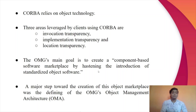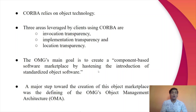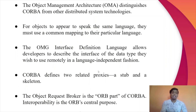What are these terms? Invocation transparency defines the viewpoint of a client sending a message to a server. Implementation transparency is encapsulation applied to distributed systems. Location transparency allows a client to invoke CORBA-enabled code that might execute elsewhere on the network. The OMG's main goal is to create a component-based software marketplace by hastening the introduction of standardized object software. A major step toward this was defining the OMG's Object Management Architecture. The OMA, or Object Management Architecture, distinguishes CORBA from other distributed system technologies.